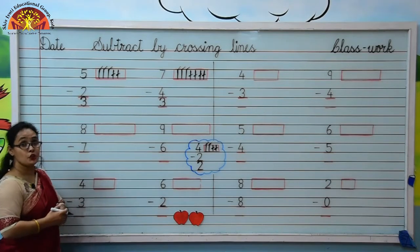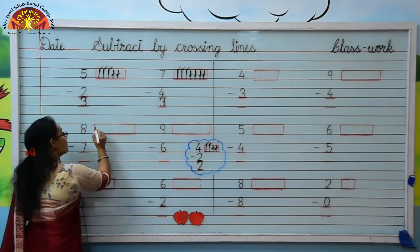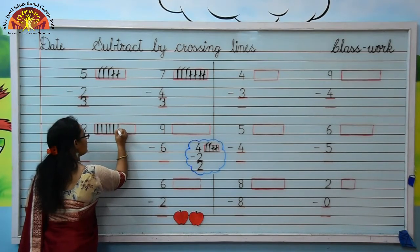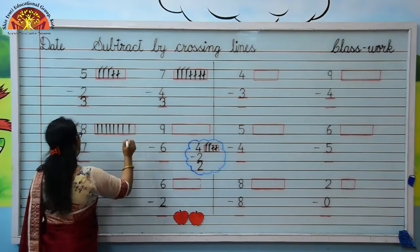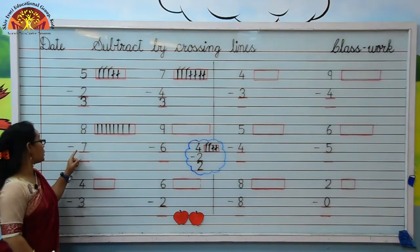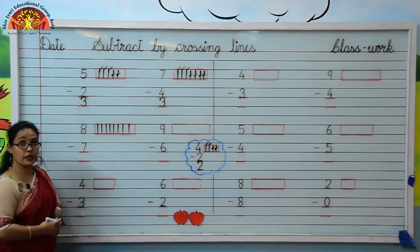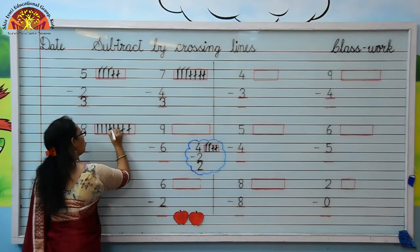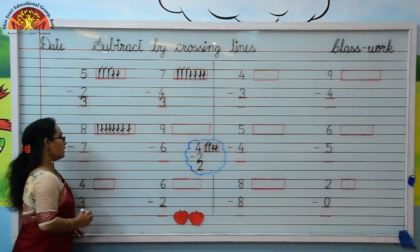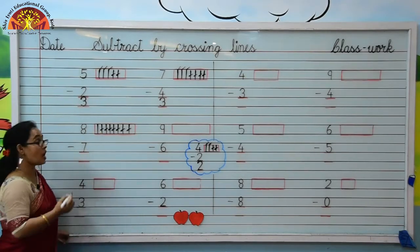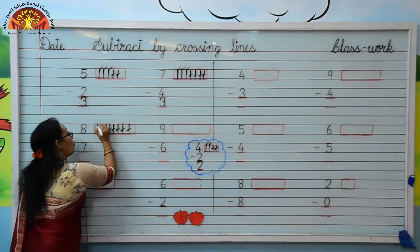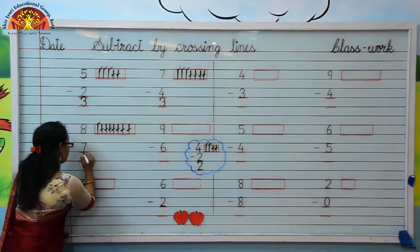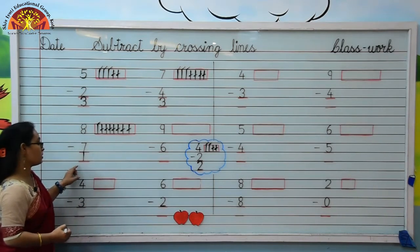Next number is 8. So we have to draw here 8 lines: 1, 2, 3, 4, 5, 6, 7, 8. The downside number is 7. Kids, we will cross 7 lines from 8 lines: 1, 2, 3, 4, 5, 6, 7. Kids, how many lines are left? Let's count: 1. There is 1 line left here. So kids, write 1 like this. Move to next.